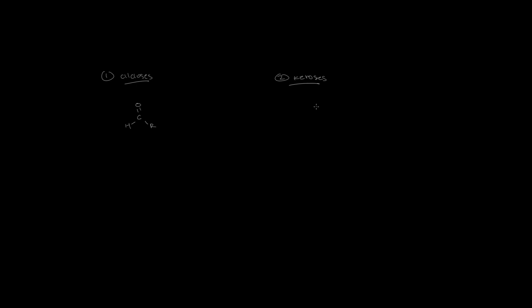Ketoses consist of ketones, which is another functional group that contains a carbonyl group. Instead of a hydrogen like in aldoses, we have two variable groups attached to the central carbon atom.